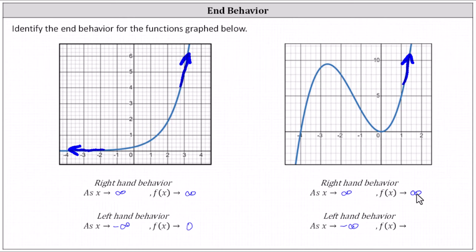Finally, for the left-hand behavior, x is approaching negative infinity, or we can think of moving left along the function. As we move to the left, the graph goes down indefinitely, which indicates the y values are decreasing without bound and approaching negative infinity. The left-hand behavior is: as x approaches negative infinity, f of x approaches negative infinity. I hope you found this helpful.